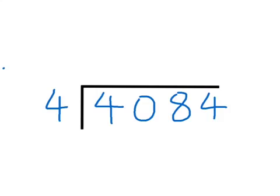Once you understand how the method works, it's reasonably easy. Four goes into 4 once. Four doesn't go into zero, so I would hold place with a zero above the line. Four goes into 8 twice, and four goes into 4 once. The answer is 1,021.